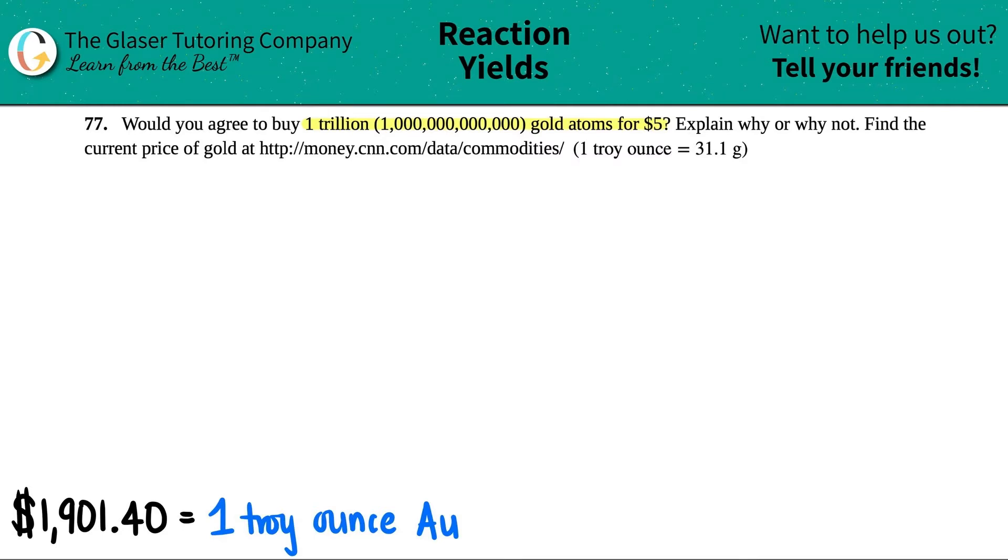Now at this moment of recording, I did go to this website and I wrote down how much it costs to acquire one troy ounce of gold. Gold is Au on the periodic table, so it's going to cost you roughly a pretty penny, $1,900 to get one troy ounce, aka 31.1 grams.